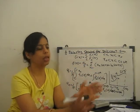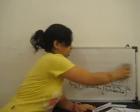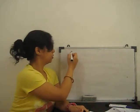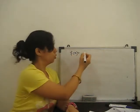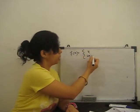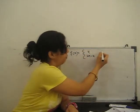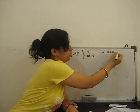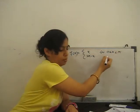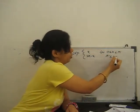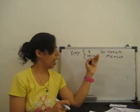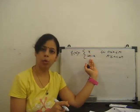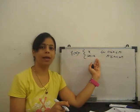Now we discuss one example of a discontinuous function so you can better understand. Find the Fourier series for f(x) = x for x from 0 to π, and f(x) = 2π − x for x from π to 2π. So our function breaks: f1(x) = x from 0 to π, and f2(x) = 2π − x from π to 2π.